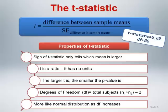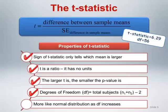There are several properties of the t-statistic worth mentioning. The sign of the t-statistic only tells which mean is larger and is simply a function of the directionality of the subtraction between the means. T is a ratio and has no units. The larger t is, the smaller the p-value is. The degrees of freedom for the unpaired t-test is equal to the total subjects in both groups minus 2. For our example, the degrees of freedom is equal to 28 plus 30 minus 2, equal to 56. Thus, when the degrees of freedom are provided as part of the results, this provides information on the size of the original sample being tested.